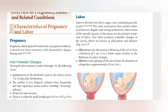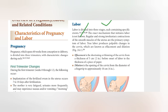Welcome everyone. Today our lecture is on the stages of labor. It is an incredible process. Childbirth and labor is a complex event divided into three stages, each marked by specific events and changes. While the exact mechanism that initiates labor is not fully understood, we know that regular and strong contractions of smooth muscle in the uterus are a primary symptom of labor.